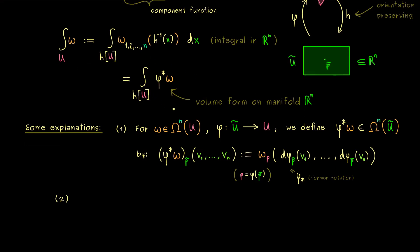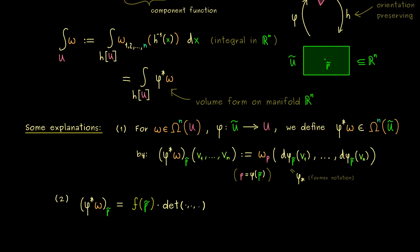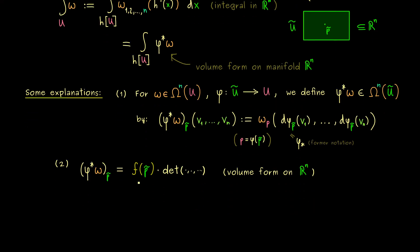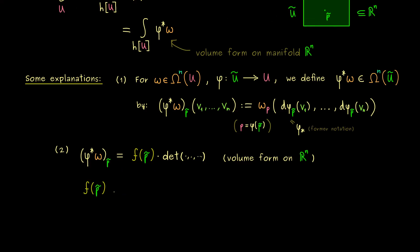That is the explanation for the pullback volume form. Now, the first step in the integration is to recall that every volume form on R^n is given by the determinant. More precisely, we have one component function — call it f of p tilde — times the n-dimensional volume form given by the determinant. This is how we measure oriented volumes in R^n, meaning all information about the volume form is contained in the function f. This function we can calculate by putting in the canonical unit vectors e1, e2, and so on, which gives us omega of the corresponding tangent vectors. We recognize this as the standard coordinate basis, denoted with the del notation — for example, the first one we write as del_1 h of p.